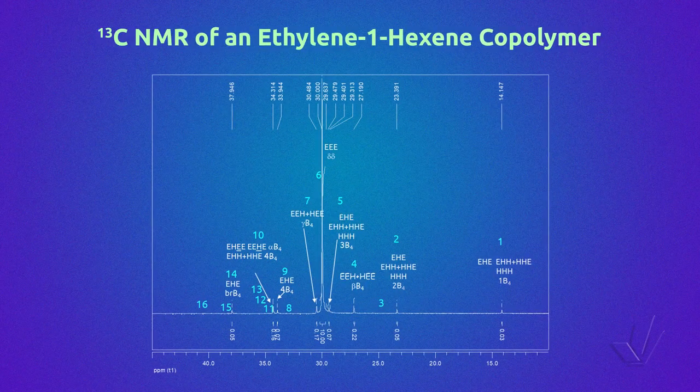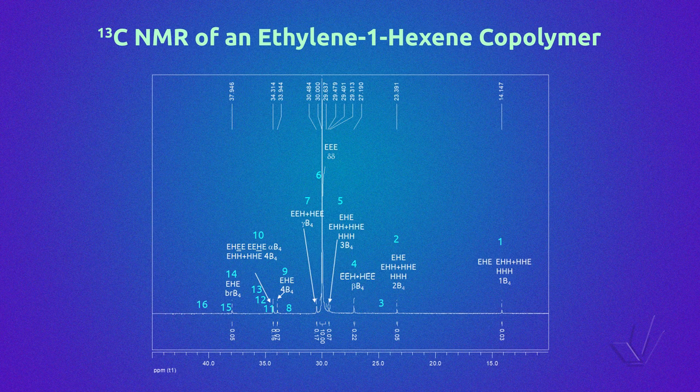Here we have an example of an ethylene-1-hexene spectrum. All the possible peaks are marked in blue. As we can see, not all the peaks are present. That means that some of the triads do not exist.